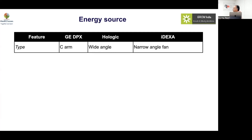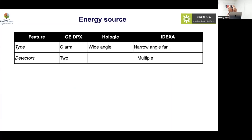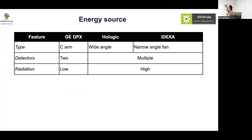The GE DPX uses a C-arm configuration, while the Hologic uses a wide beam versus narrow beam design with two detectors compared to multiple detectors. Radiation exposure is more for Hologic and iDXA but still much lower compared to a standard X-ray.